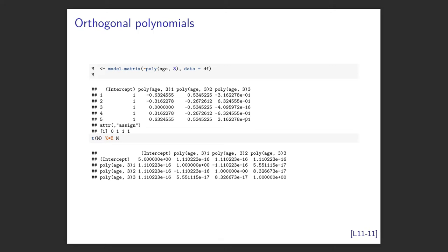With orthogonal polynomials from `poly()`, the columns are very different. The key property is: if you take any two of the non-intercept columns and multiply them element-wise, you get zero — they are orthogonal to one another. You can verify this by computing M'M and seeing that all off-diagonal terms are zero and the diagonal (except the first) equals one.